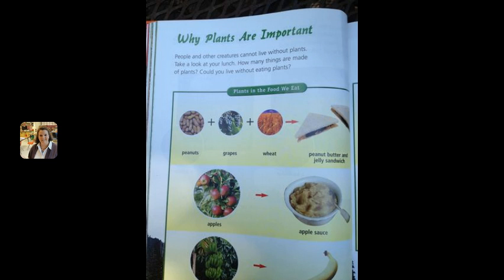Plants and the foods we eat. Peanuts plus grapes plus wheat make a peanut butter and jelly sandwich. Apples can make applesauce, and banana trees make bananas.